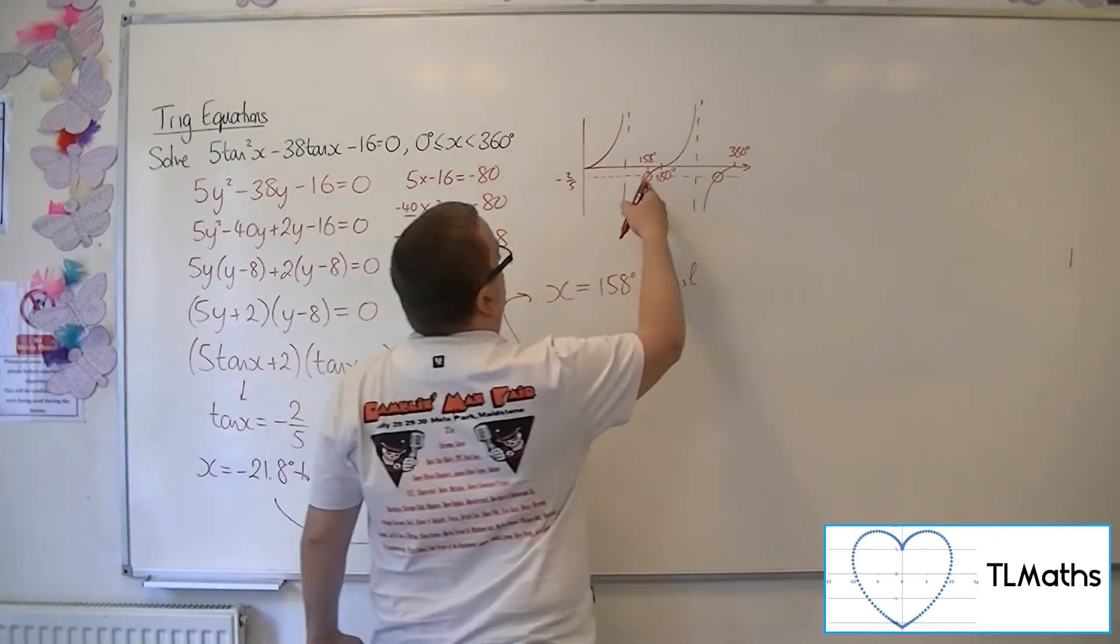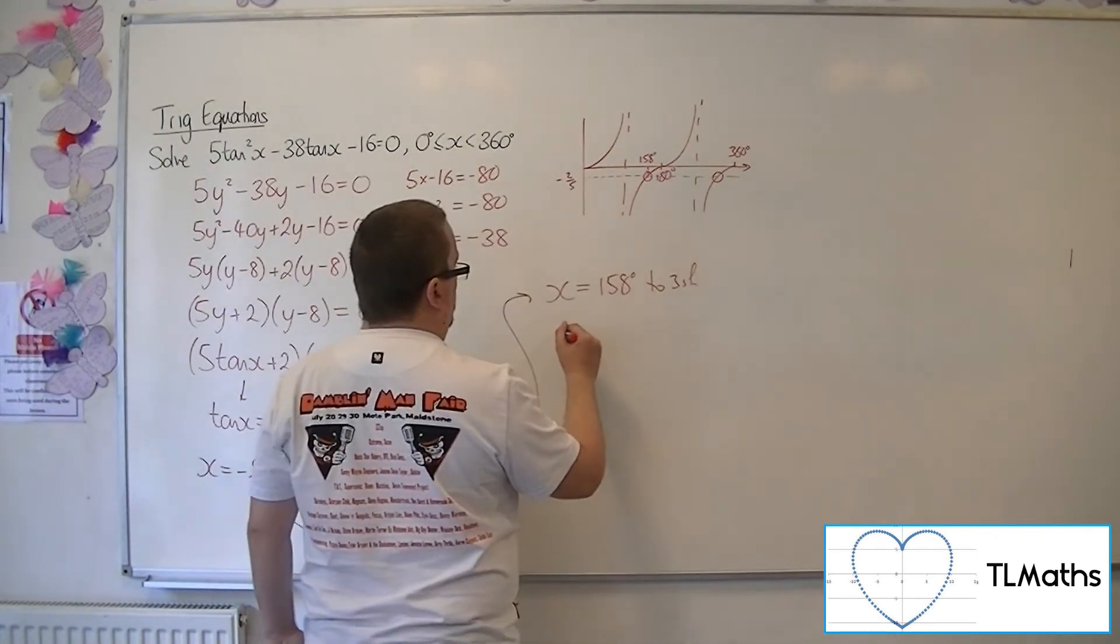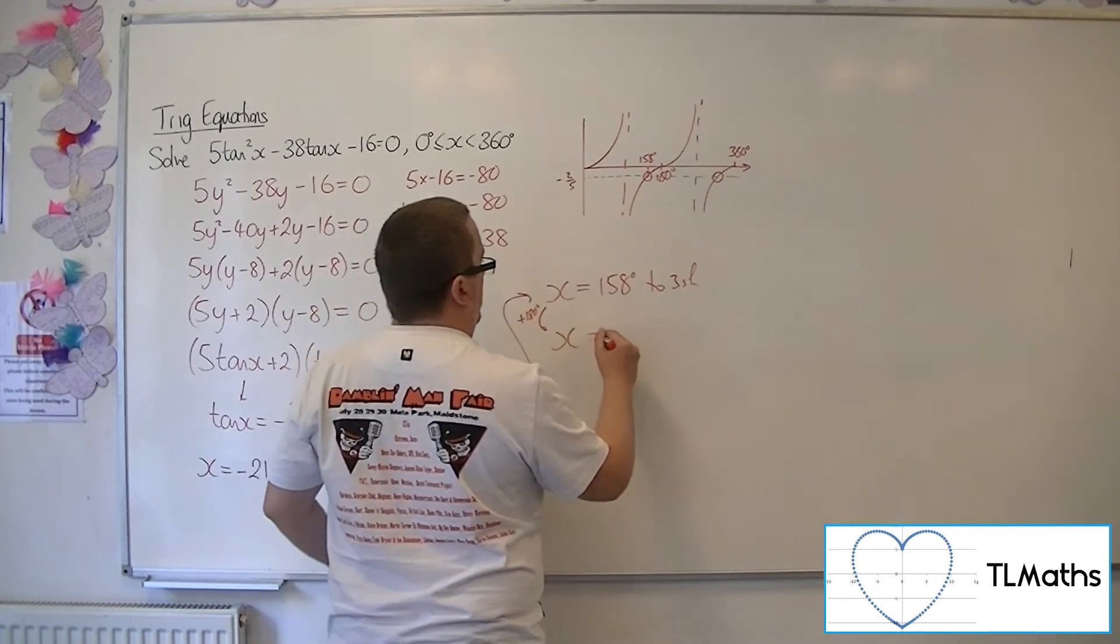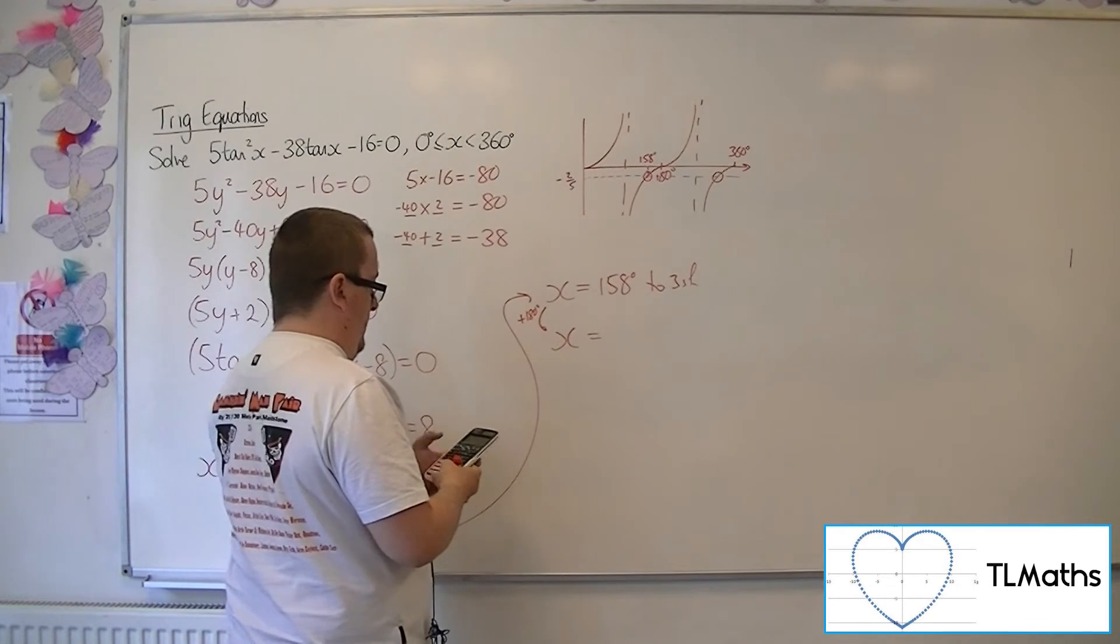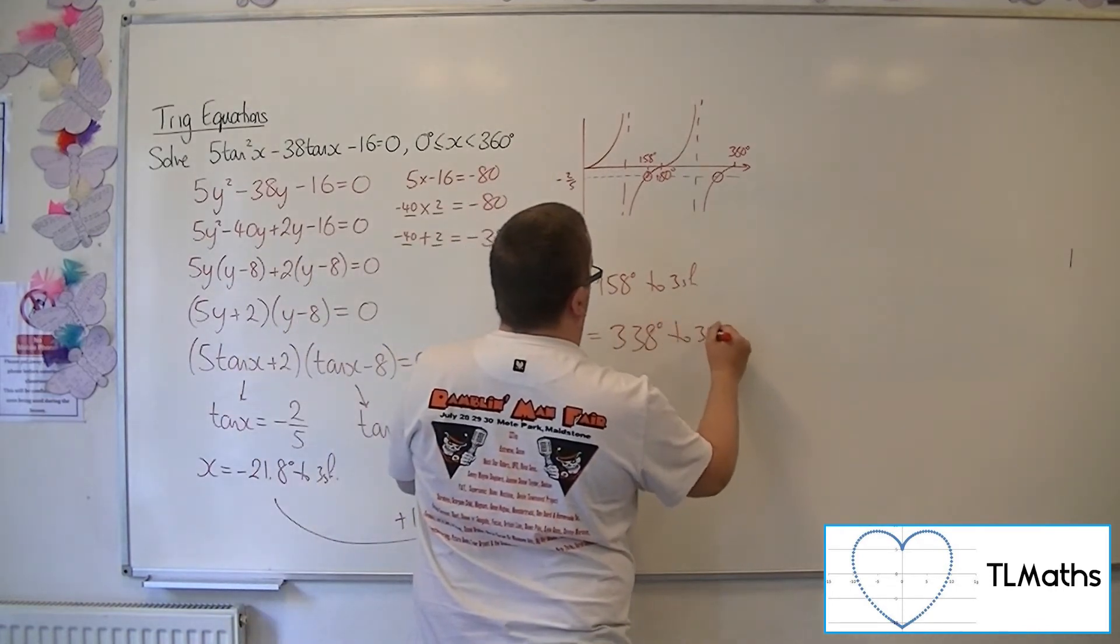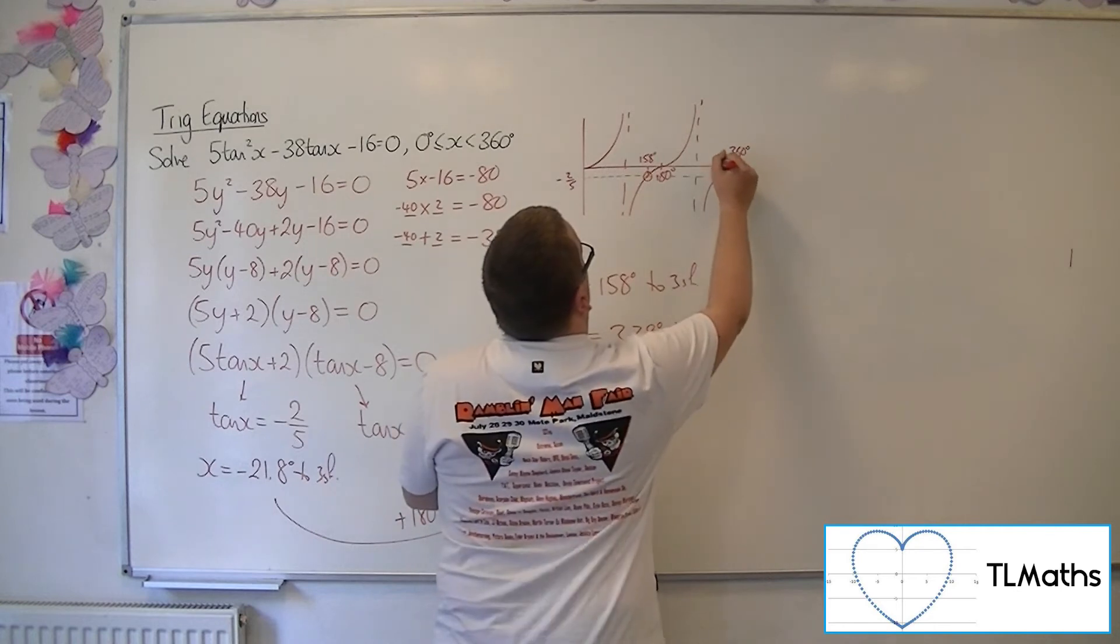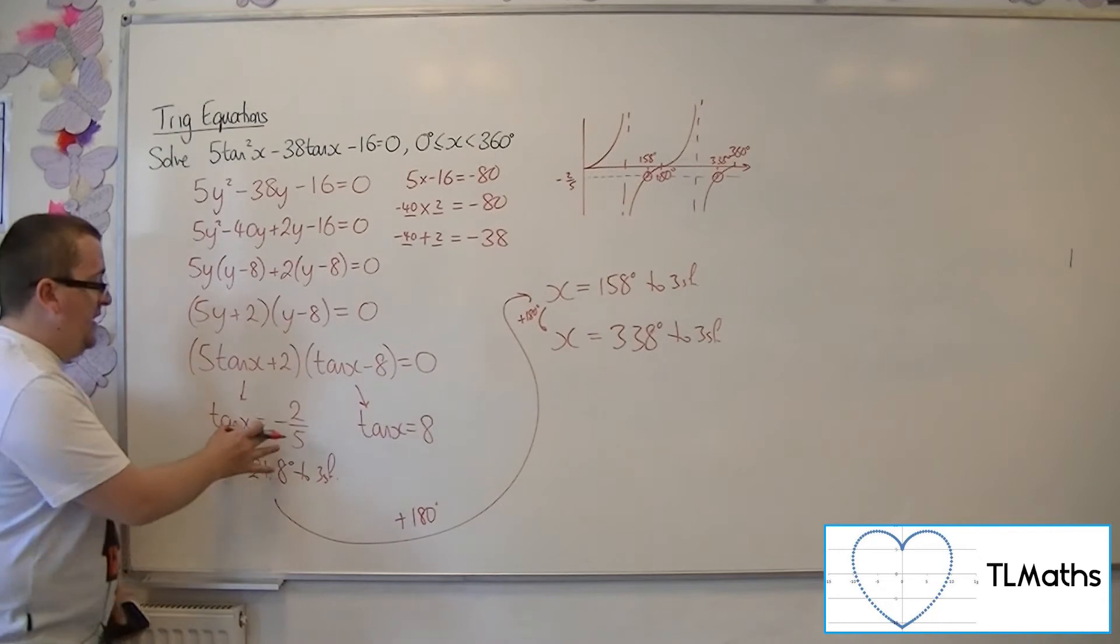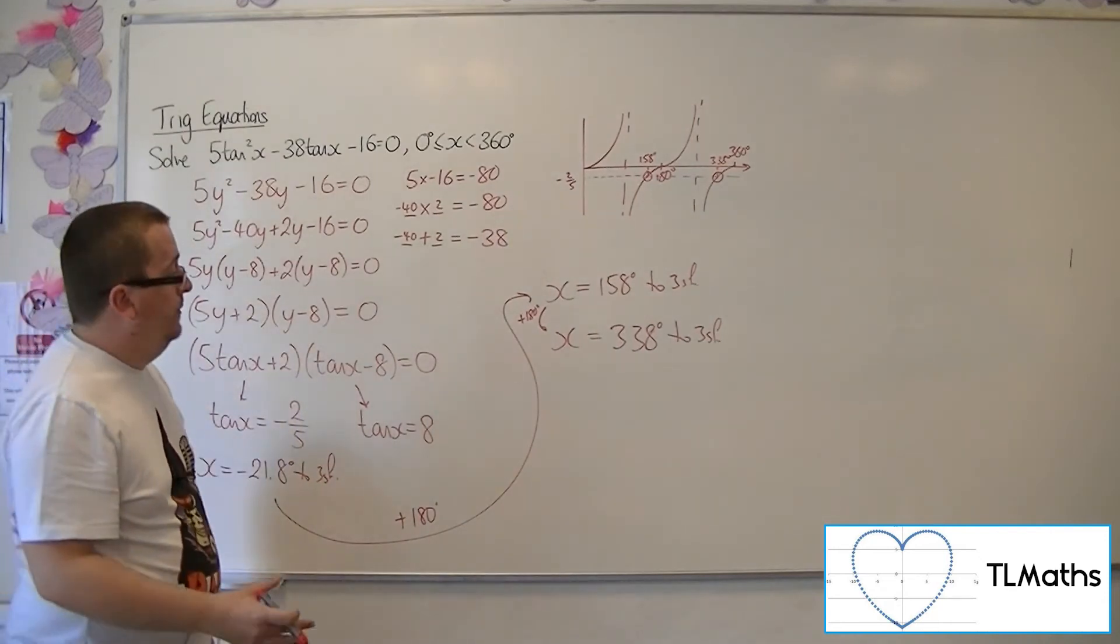And then I can add on another 180 onto that to get my second solution. So adding on another 180 gets me 338. So they are the two solutions to tan x is equal to minus 2 fifths.